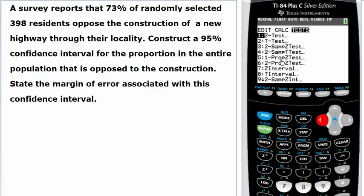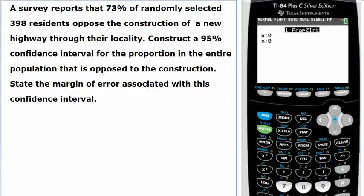Here we have one proportion z test, but we want to construct an interval in particular. Here we have one proportion z interval, that's the only interval we are looking at. We will select it. It's asking for x and n, that is how many out of how many. We know that n is 398, but x we will have to calculate.